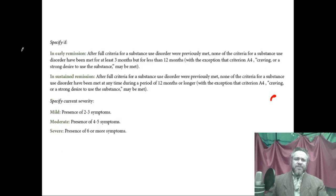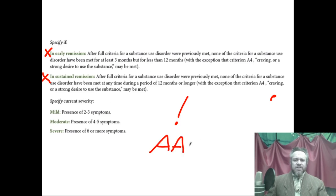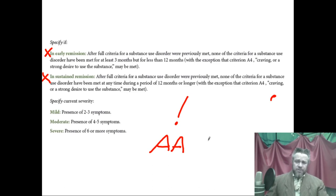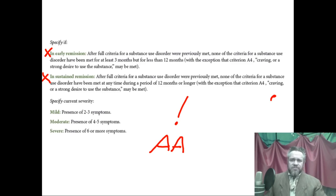You also specify whether a disorder is in early remission or sustained remission. Notice this whole system assumes the Alcoholics Anonymous model — once you're an addict, you are always an addict. The DSM has no way to specify that a person is no longer addicted to a substance. If you have developed tolerance, withdrawal, or problematic substance use dependence, then as far as the DSM is concerned you have it for the rest of your life, even if you go 30 solid years never having any cravings and using moderately — which happens.